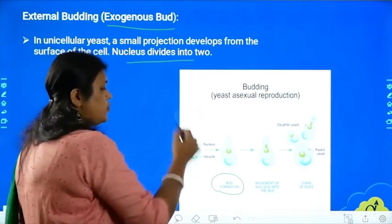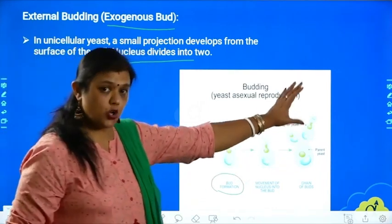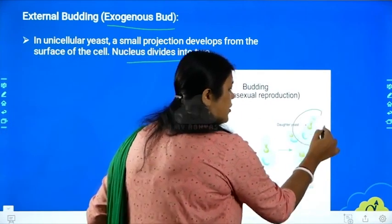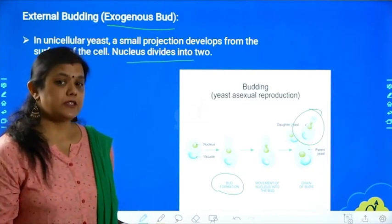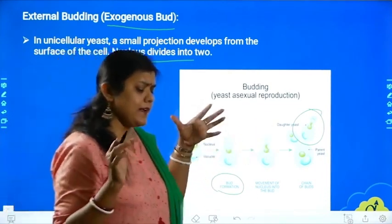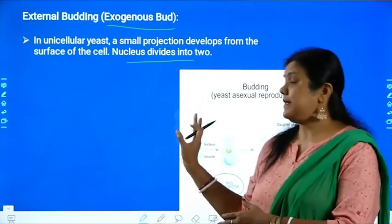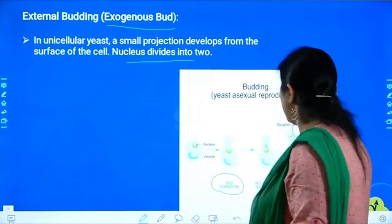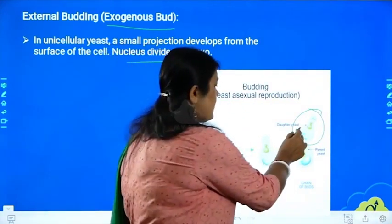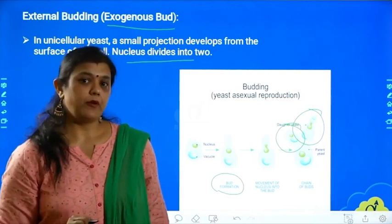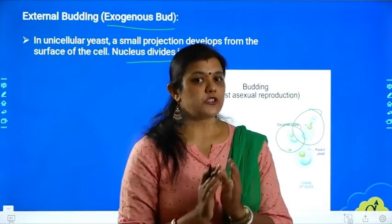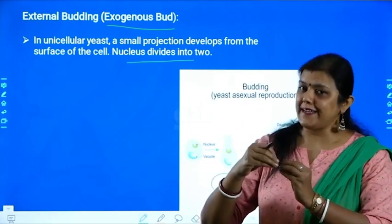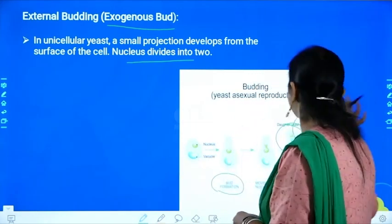The nucleus divides into two, and once divided, the bud grows to a proper size and shape, then gets detached from the body of the yeast to form a new yeast. From the parent yeast we get a daughter yeast. It is not that one yeast forms only one bud — they can form several buds. As you can see in this photo, there are two buds getting formed and both will mature and separate from the body of the yeast. This is called an exogenous bud.